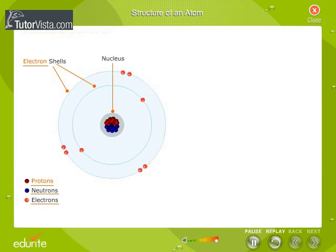Thus, an atom consists of three elementary particles, namely proton, neutron and electron.